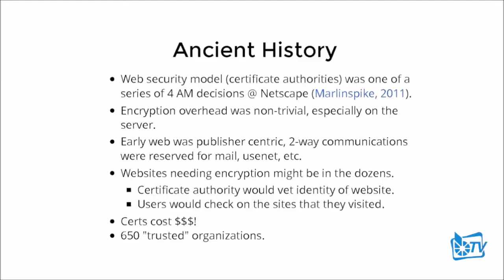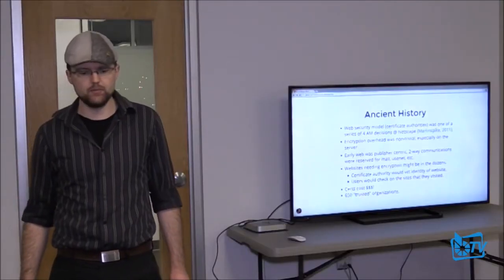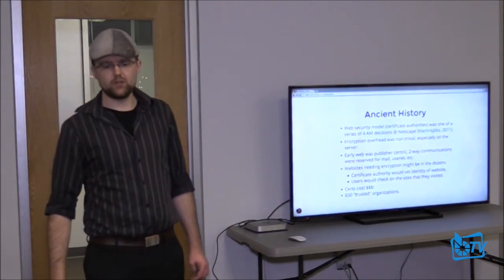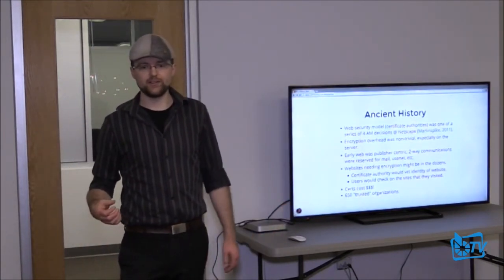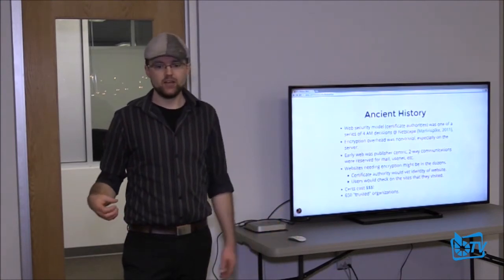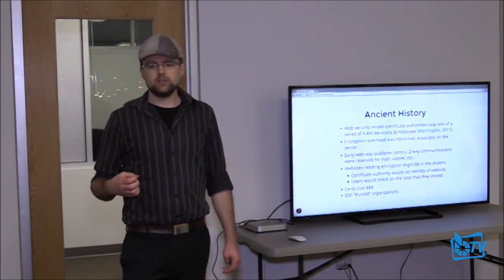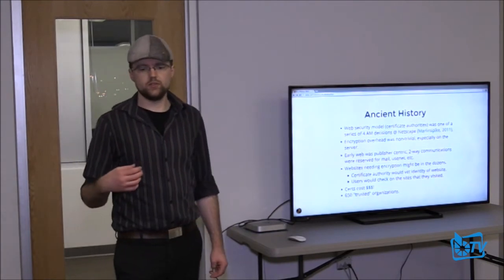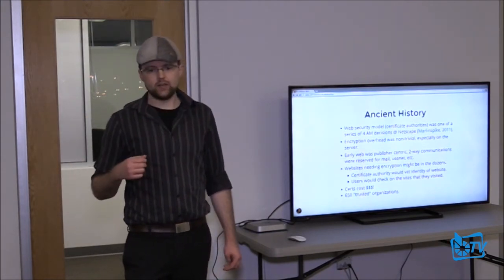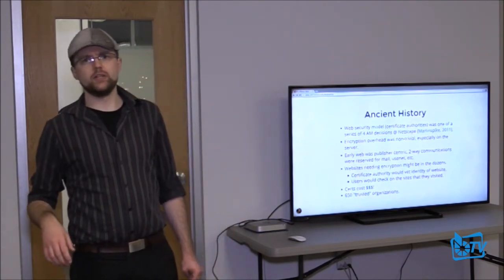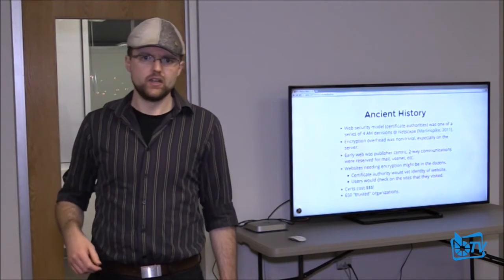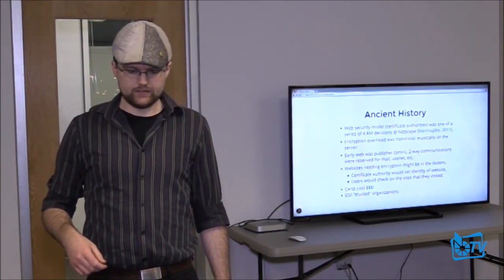Back then, encryption overhead was non-trivial. You had to pay RSA if you wanted to use RSA encryption. The early web was very publisher-centric — two-way communications were reserved for email, Usenet, IRC. There would be very few things you could log onto a website for. They thought there might be a dozen sites that needed encryption — your banks, maybe. They also had no Google. Yahoo was literally a single page with about a dozen links on it. The notion was they needed a third party to say that bankofamerica.com was actually owned by Bank of America.